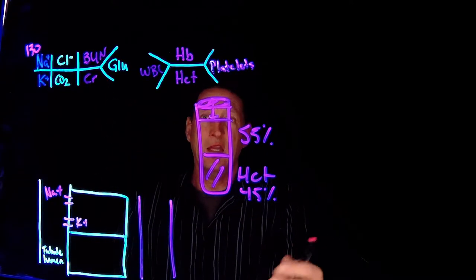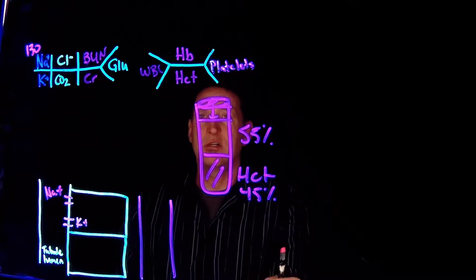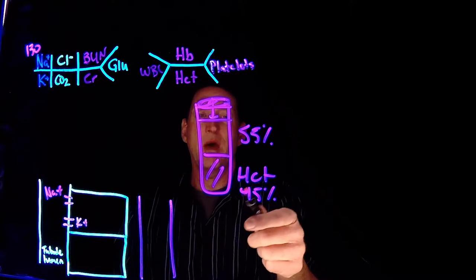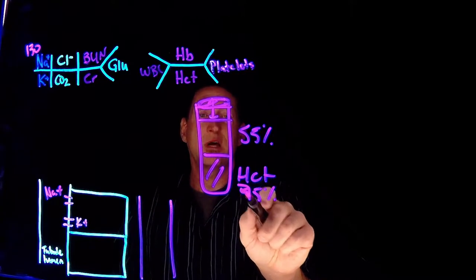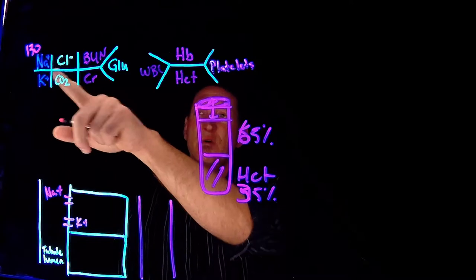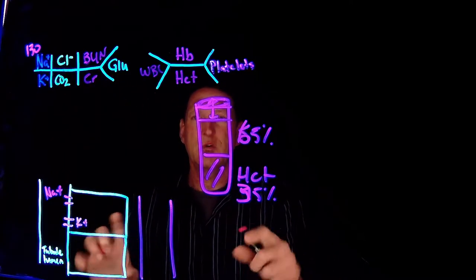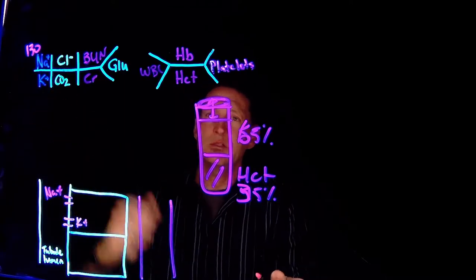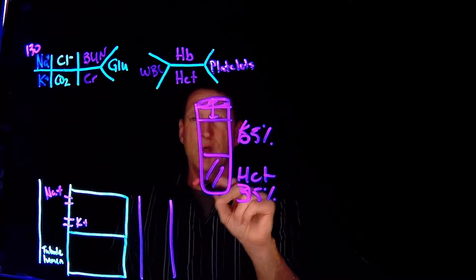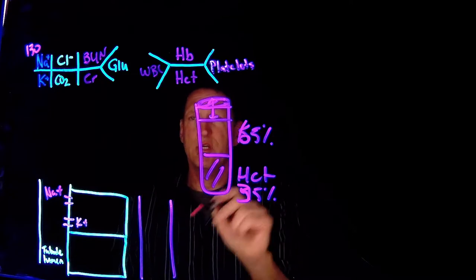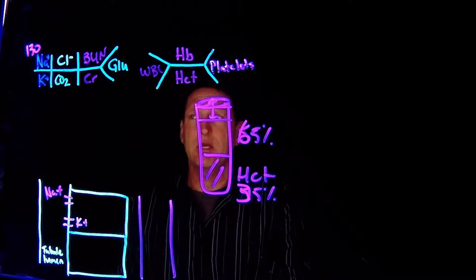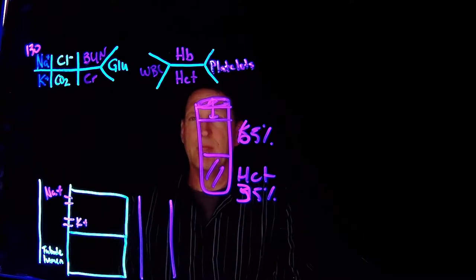Hematocrit might drop from 45% to 35% confirming hemodilution — sodium, BUN, and hematocrit all agreeing. When looking at sodium, rule out endocrine drivers like hypoaldosteronism with Addison's and hyperaldosteronism with Cushing's, then look at your other indicators to see if sodium is being hemoconcentrated or hemodiluted. Typically it's a change in volume status that's changing the sodium.